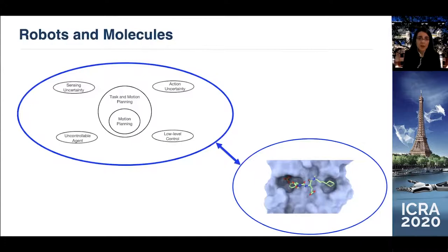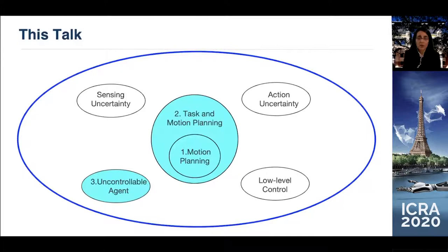The generalizability of our approaches is probably the reason why it has been possible to transfer some of our work to the analysis of protein-ligand interactions. The blue molecule is the protein, and the stick-like molecule — the ligand — sits tightly in the cavity of that protein. This ligand is an inhibitor of STAT3 and a potential drug for cancer treatment. I will start with motion planning, then talk about task and motion planning, and then introduce a scenario where a human works with a robot.